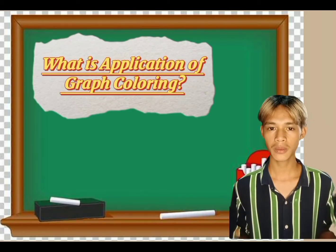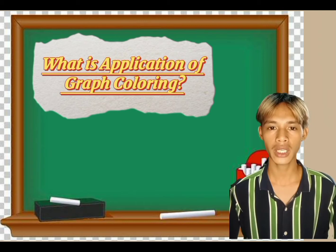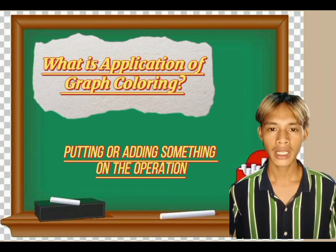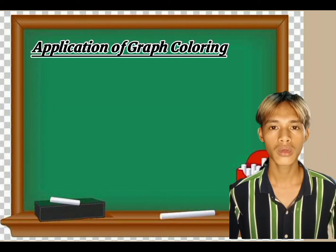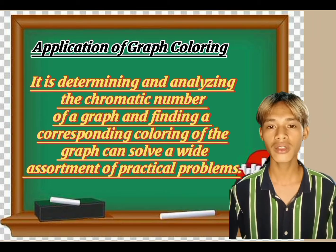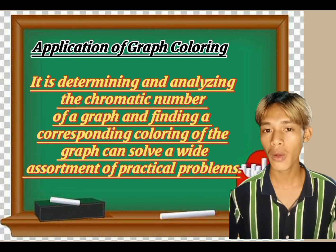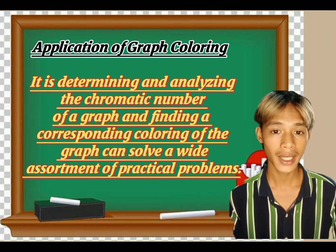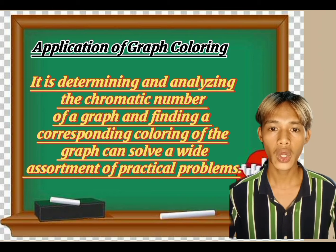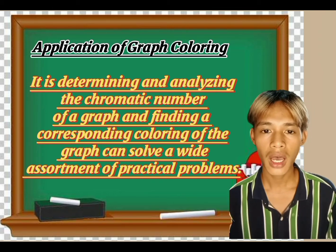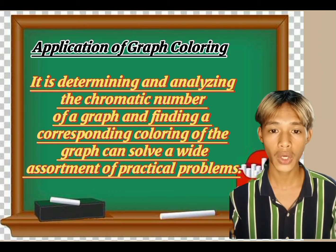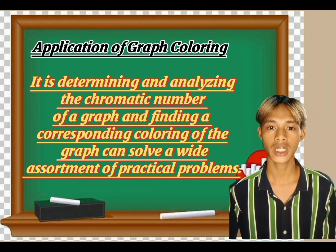So, what is the application of graph coloring? Application of graph coloring means determining the chromatic number of a graph and finding a corresponding coloring of the graph that can solve a wide assortment of practical problems. In other words, we are going to analyze and find the chromatic number — that is, how many colors are needed to use in a graph.